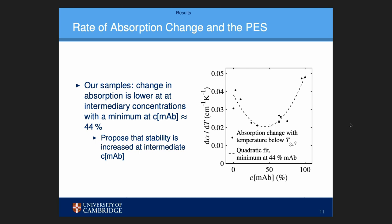What we see is that there is a minimum change of absorption with temperature at intermediary concentrations — about 50% antibody, 50% sucrose. Thinking back to the potential energy surface model, this could actually mean that at those concentrations we do not get much change in the available motions, suggesting that the stability of a sample is increased at those intermediary concentrations.